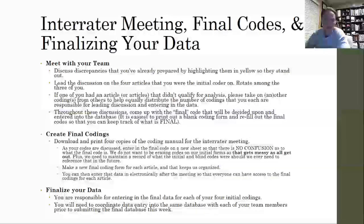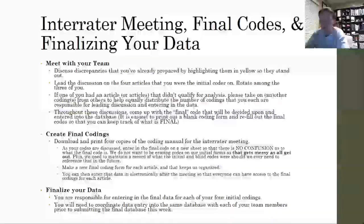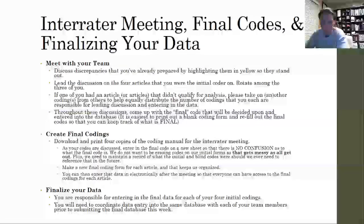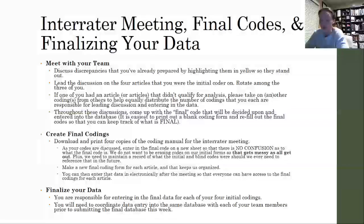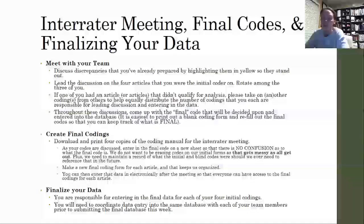When it's time for the inter-rater meeting, you're going to meet with your team and discuss the discrepancies you've already prepared by highlighting them on your initial and blind code forms. Each of you is going to lead the discussion on the four articles that you were the initial coder on, and you're just going to rotate among the three of you in the group. If one or a couple of you had articles that didn't qualify for analysis, I'm asking that you reach out to your group members and take on another coding from someone else, to help equally distribute the number of codings each of you is responsible for leading and entering into the final database.